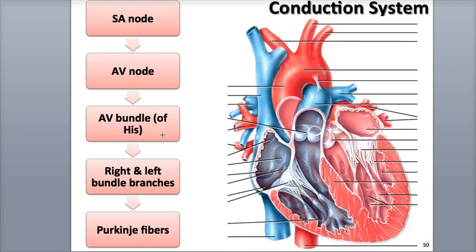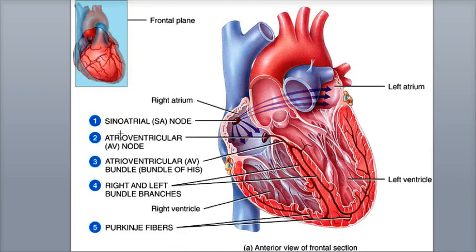The conduction system propagates cardiac action potentials in the following sequence. The sinoatrial, or SA node, also called the pacemaker, is the start of cardiac excitation. Think of it as a spark plug that gets the heartbeat started. The SA node is located in the upper wall of the right atrium, near the opening of the superior vena cava.